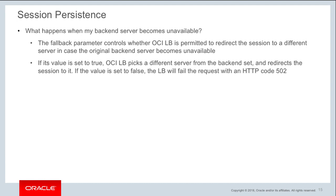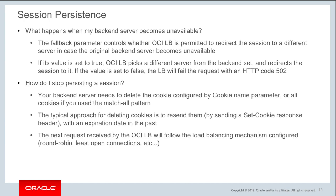When the backend server becomes unavailable, the fallback parameter in session persistence controls what happens. If you set fallback to true, the OCI load balancer picks a different server from the backend set and redirects the session to that server. If the value is set to false, the load balancer will fail the request and send HTTP code 502. To stop persisting a session, the backend server must delete the session persistence cookie — or if using match-all, delete all cookies — by sending a set-cookie response header with a past expiration date.